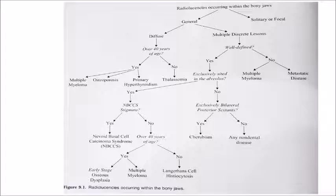Multiple discrete lesions in the alveolus region that are well-defined can be nevoid basal cell carcinoma syndrome. Multiple discrete lesions in patients over 40 years of age can be osseous dysplasia at early stage or multiple myeloma. In patients below 40 years of age, it can be Langerhans cell histiocytosis.